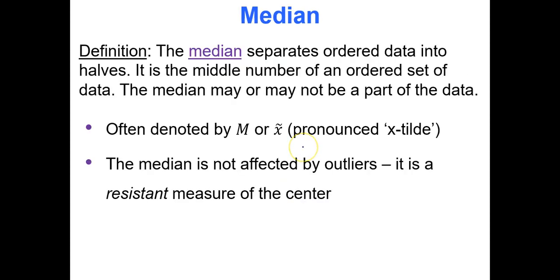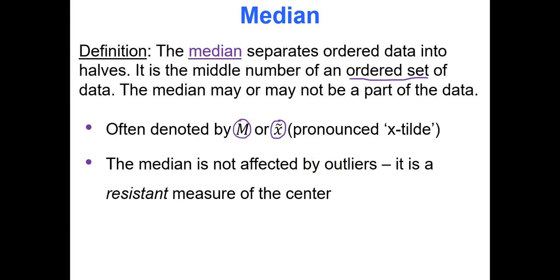The median is the same thing as the second quartile — it separates the data into halves. It is the middle number of an ordered set of data. The data must be ordered before you find the median, and it may or may not be part of the data set. Some books use x-tilde or capital M to represent the median. The median is not affected by outliers — you count out data values from both ends until you find the one in the middle, so outliers get crossed out. This means the median is resistant.